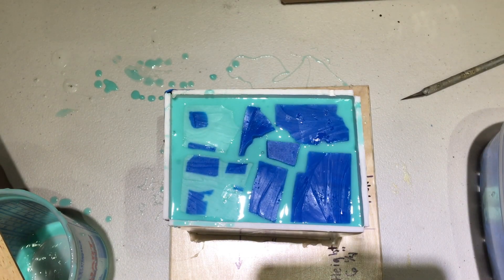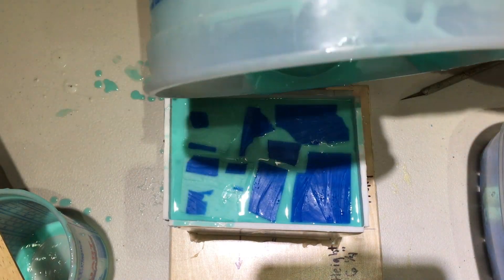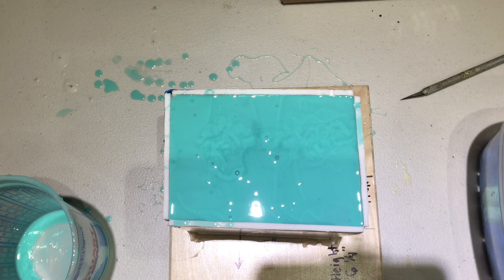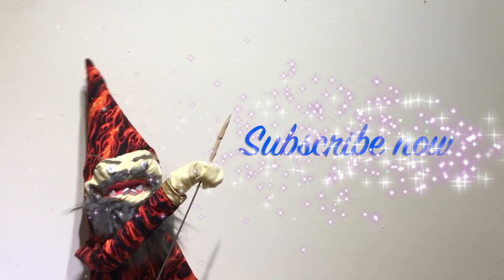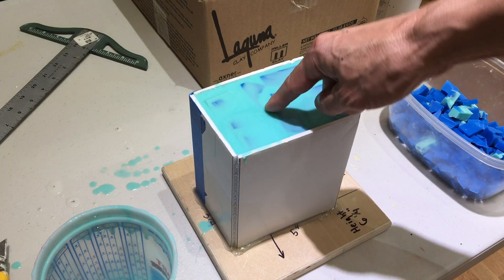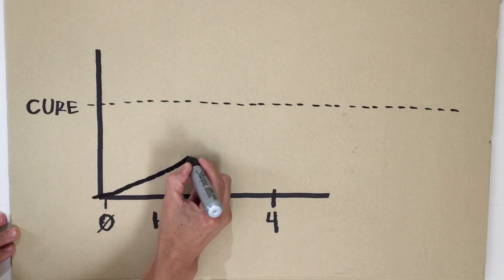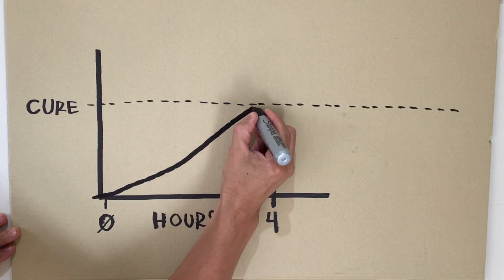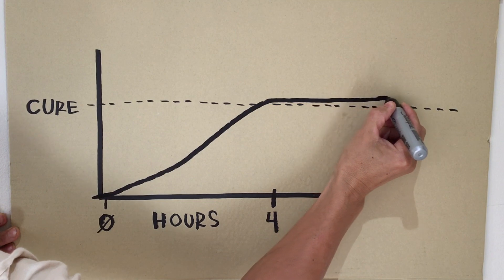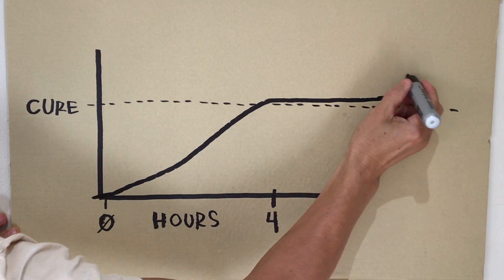The Moldstar 15 has a pretty fast cure time of four hours. That means you need a minimum of four hours before you can open the mold up. My advice is to always let it cure overnight. There's this thing rubbers do called creeping. Even after it hits the cure mark, it doesn't completely plateau. It's still alive and moving around a little bit.